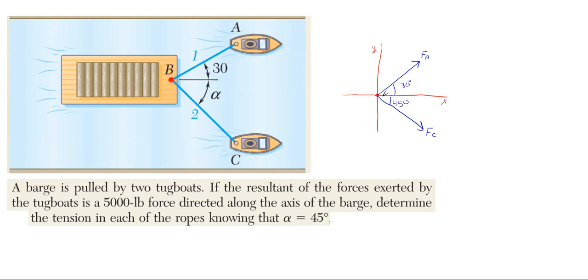These tugboats are pulling with such tension on this barge that the resultant between these two is directly horizontal in the direction of the axis of the barge, and that is 5,000 pounds.